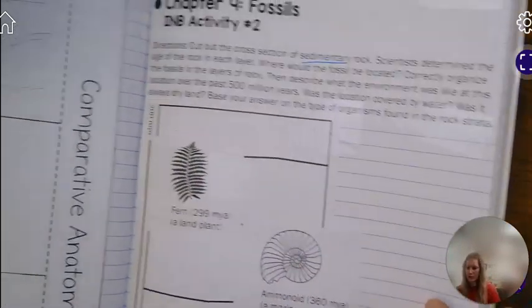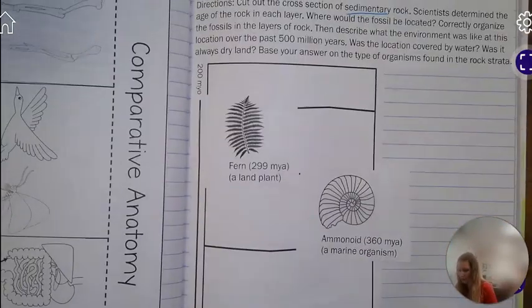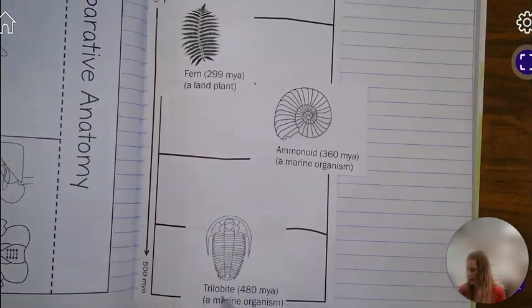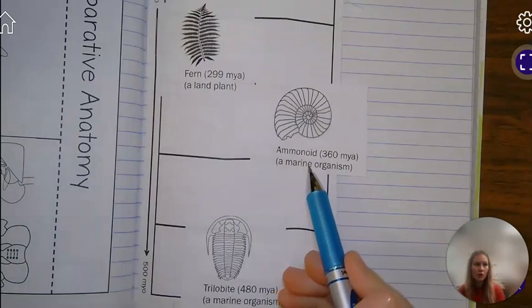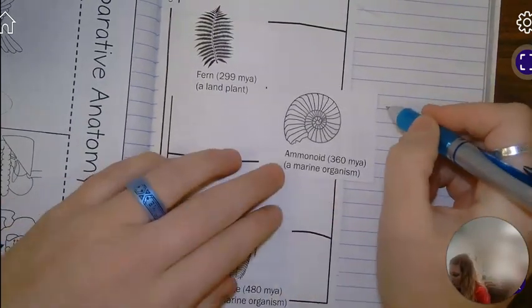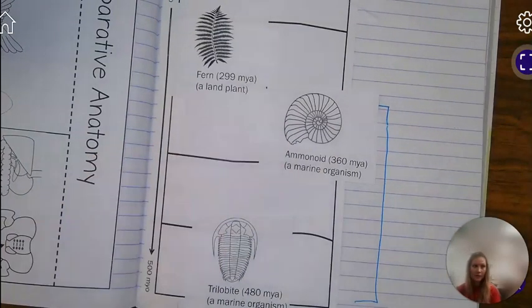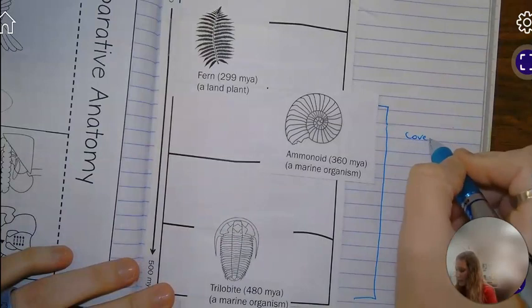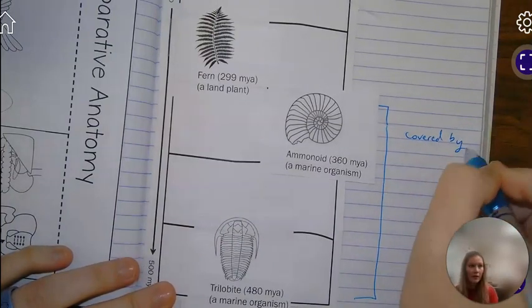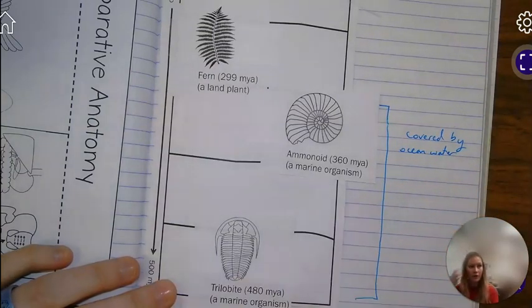Let's start all the way down here because we have a trilobite, which is a marine organism, and we have an ammonoid, which is also a marine organism. So this entire chunk of time would have been covered by ocean water.